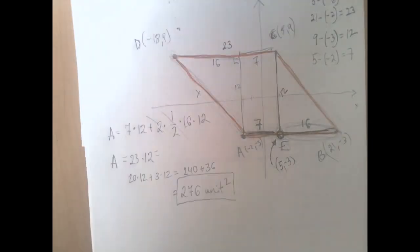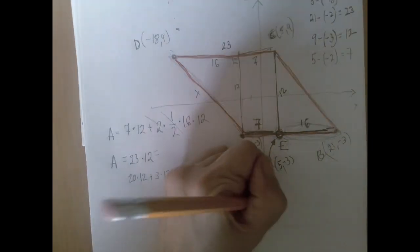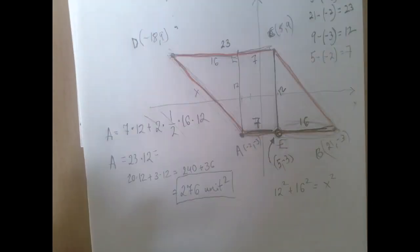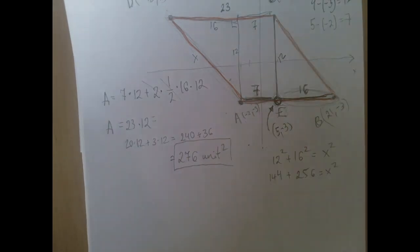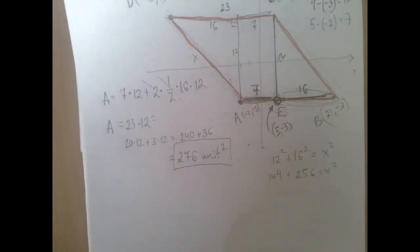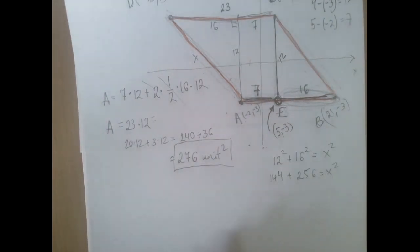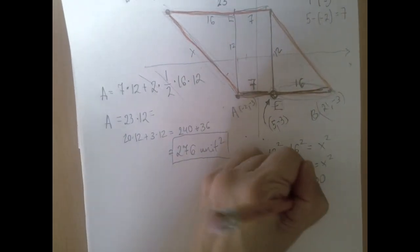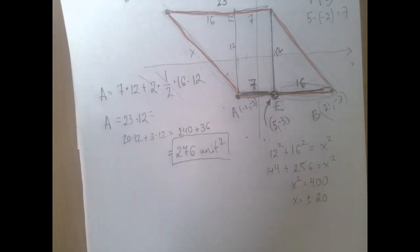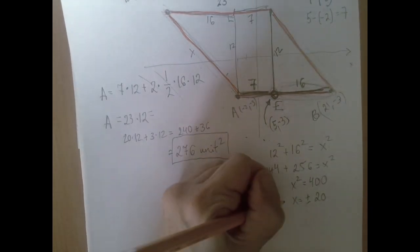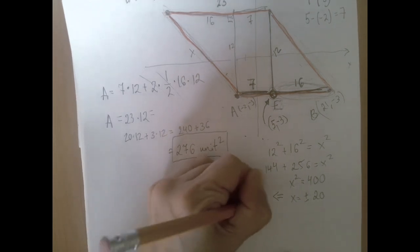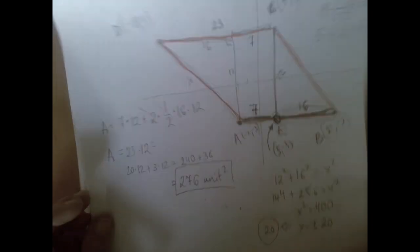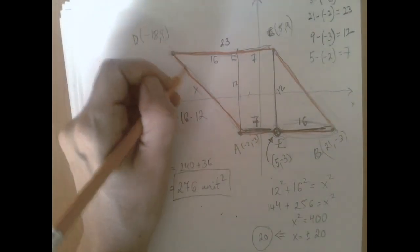So if we call it X and we just run the Pythagorean theorem on it, then we get that 12 squared plus 16 squared equals to X squared. 12 squared is 144, 16 squared is 256. We add and get 400. So this algebraic equation has two solutions, 20 and negative 20, but because X is a distance, negative 20 will be ruled out, and the hypotenuse is just 20.